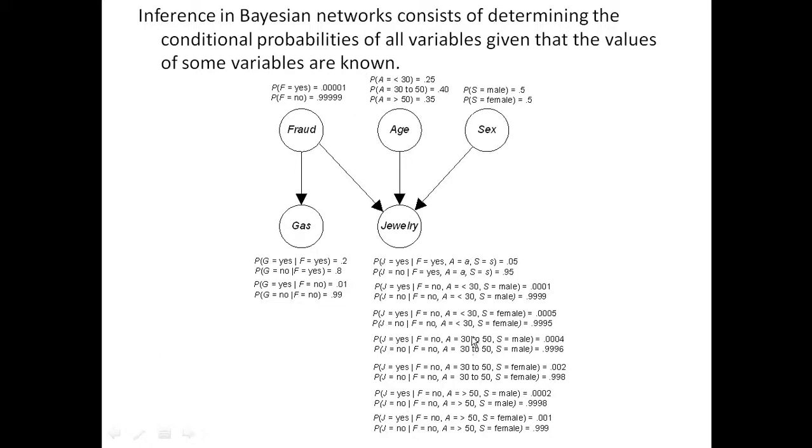Let's look at where your sex is male, and you're young, it's .0001. The probability of buying jewelry is smaller.